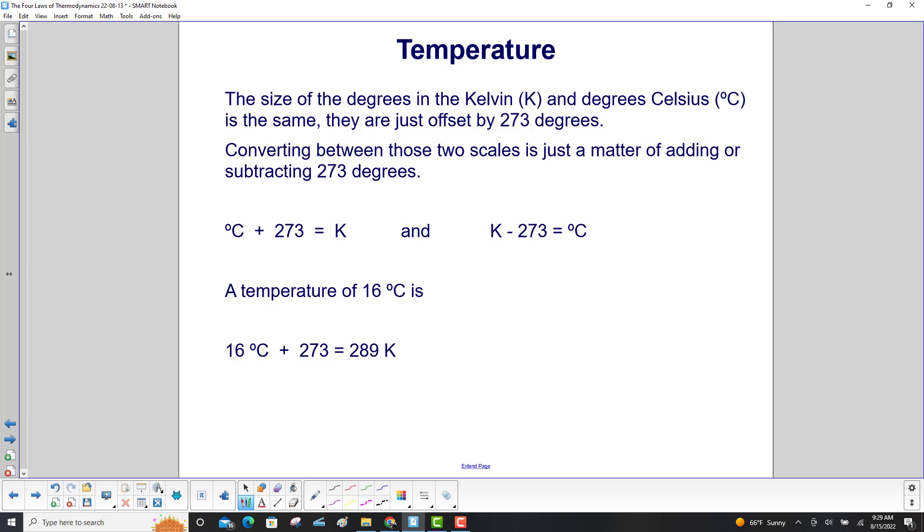The size of the degrees in the Kelvin and Celsius scales are the same; they are just offset by 273 degrees. Converting between those two scales is just a matter of adding or subtracting 273 degrees. If you have a Celsius reading, you add 273 to get it in Kelvin. If you have Kelvin and want to go to Celsius, you subtract 273.